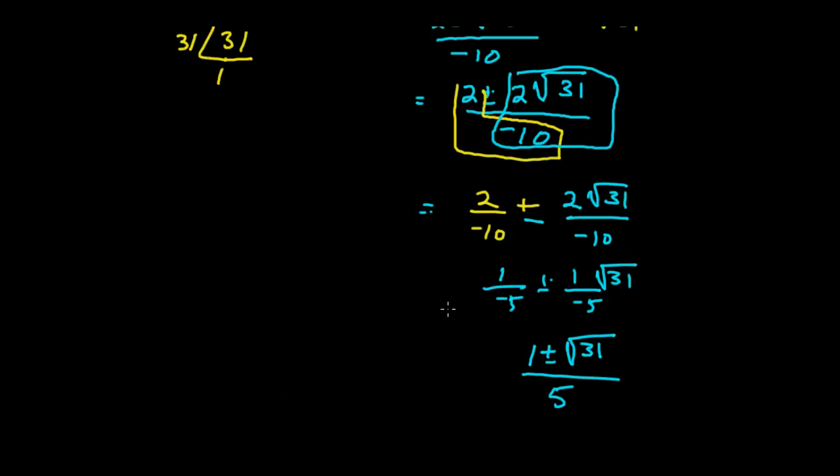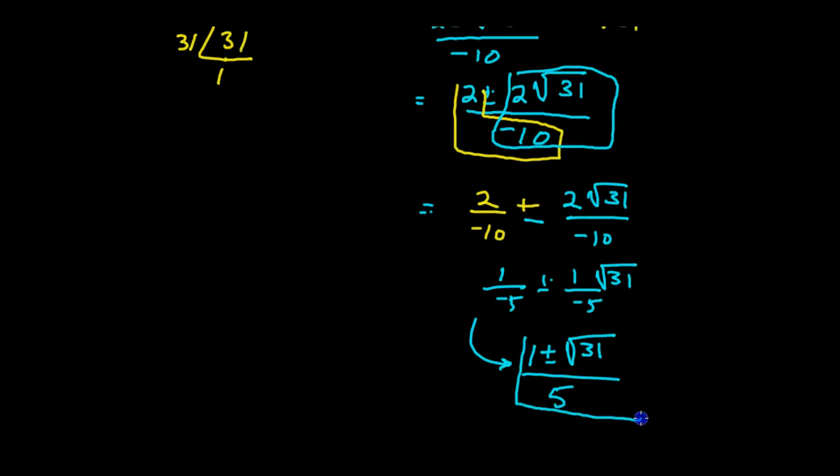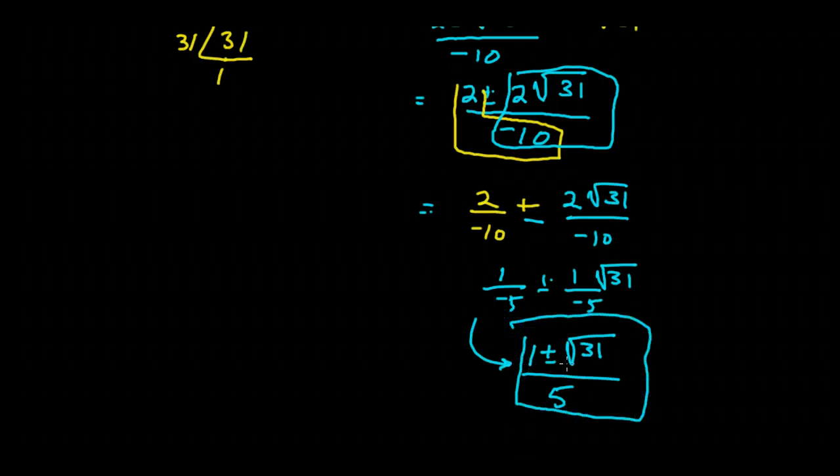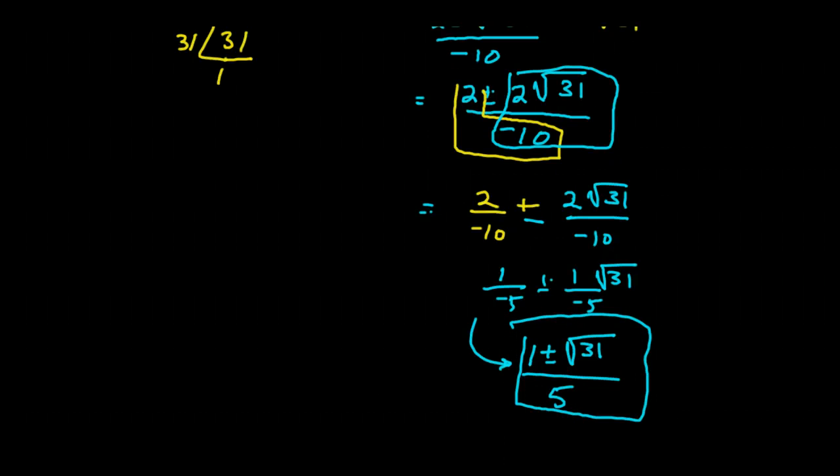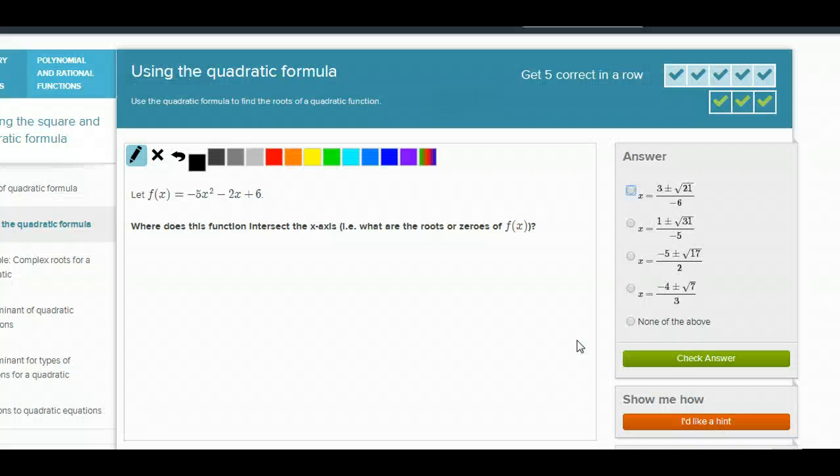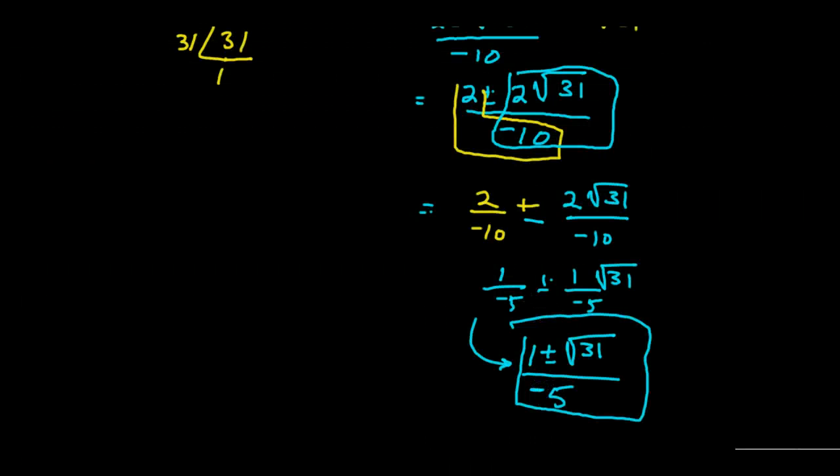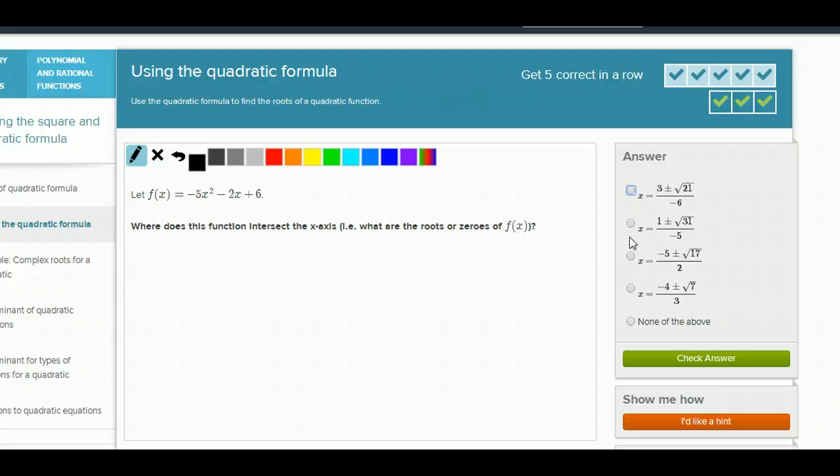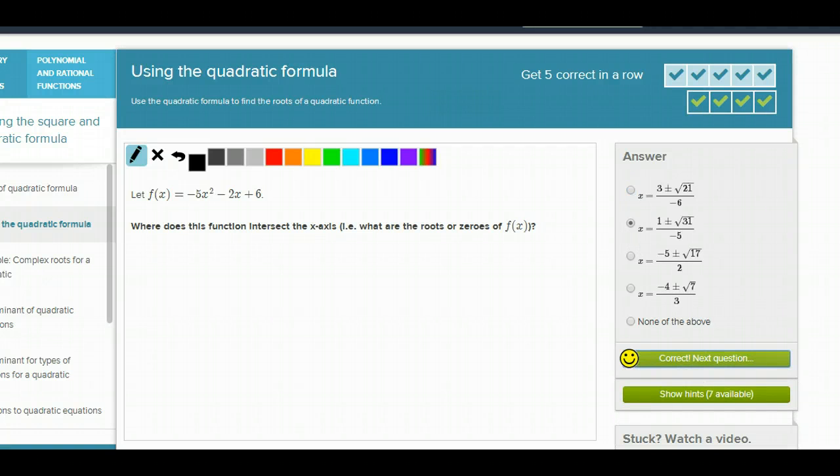And let's see if we have something in our Khan Academy that says 1 plus or minus the square root of 31 over negative 5. It should have been a negative. Yep, those are both negative over a negative 5. And that's here.